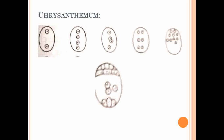Next under tetrasporic is the Chrysanthemum type of embryo sac. From the binucleate stage, nuclear division forms the four-nucleate stage. One nucleus migrates to the micropylar end, one to the chalazal end, and the middle two fuse with each other to become a single nucleus. So it again becomes a trinucleate arrangement.